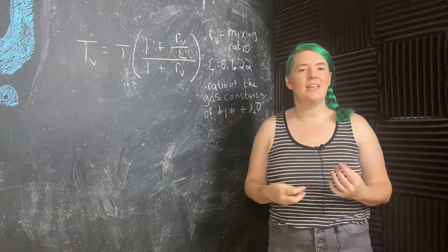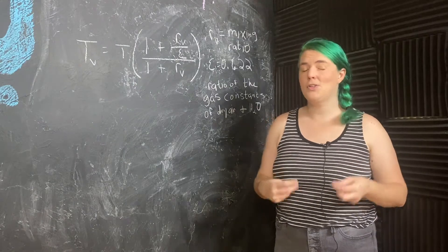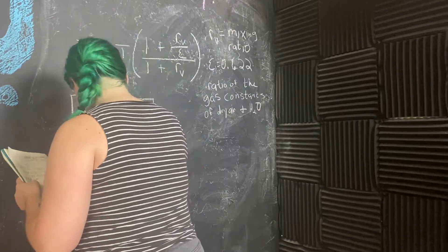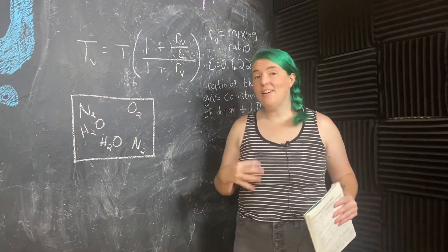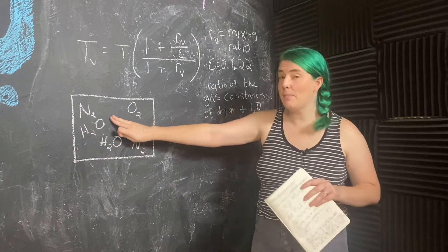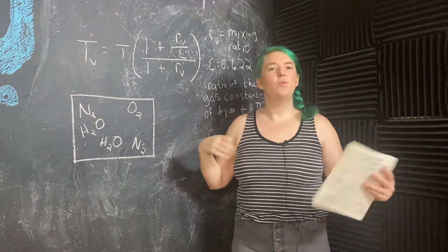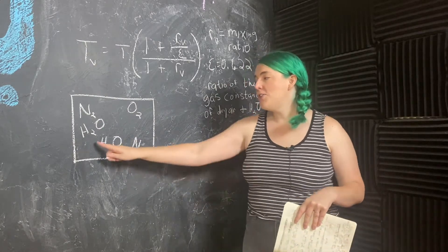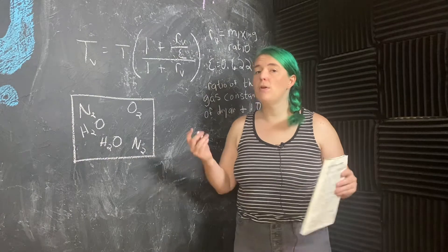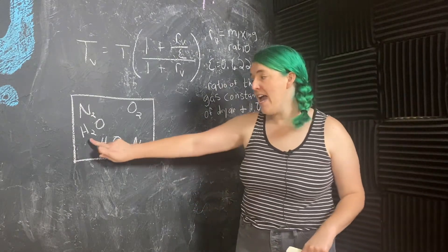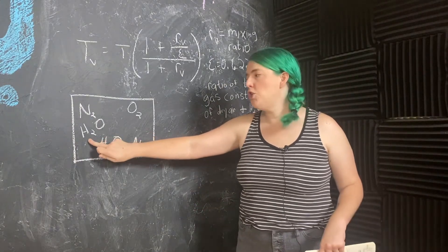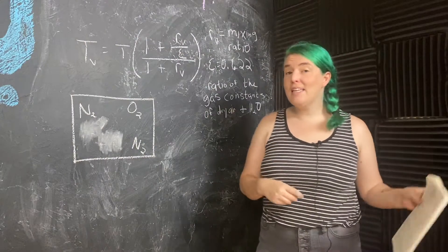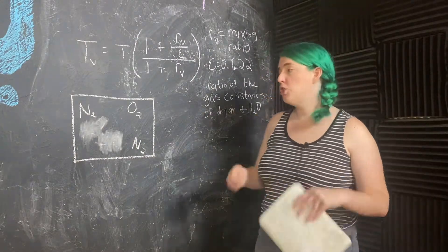So for that, let me draw you a picture. The idea with virtual temperature is if we start with this air parcel that has regular air—nitrogen and oxygen and that little bit of argon—and then it also has water vapor, conceptually what virtual temperature does is we're going to take out each of these molecules of water vapor and replace it with a molecule of dry air.